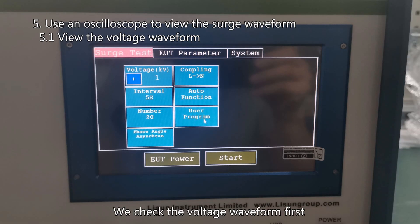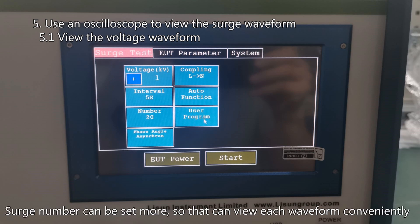We check the voltage waveform first. Surge generator settings: surge voltage positive 1 kV, coupling direction L to N. Surge interval such as 5 seconds. Surge number can be set more so that we can view each waveform conveniently.